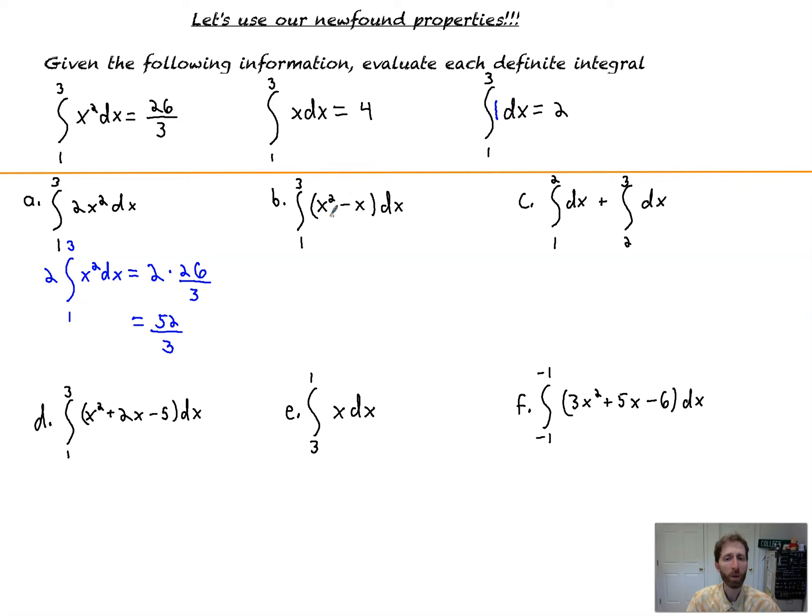All right, we're going to do some more rule following. Here we're told the definite integral from 1 to 3 of x squared minus x. Well, we've got two different integrals that have each of those components. Remember that you can break this integral up as the integral from 1 to 3 of x squared dx minus the integral of 1 to 3 of x dx.